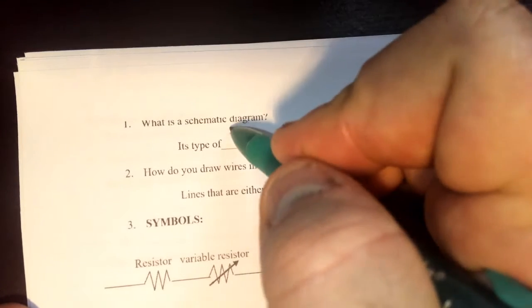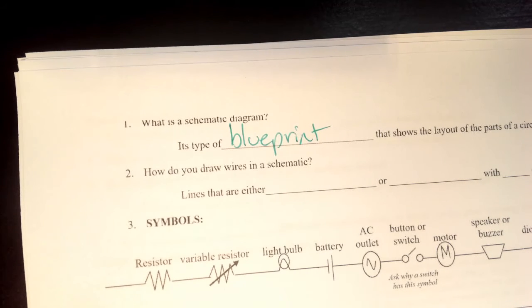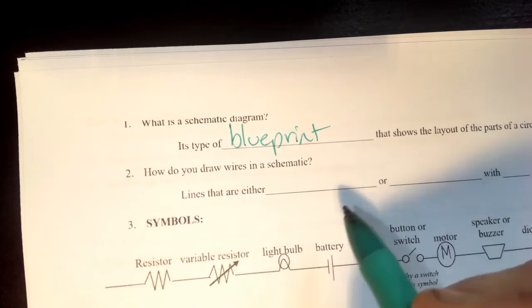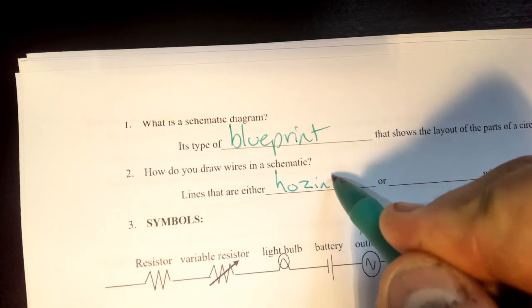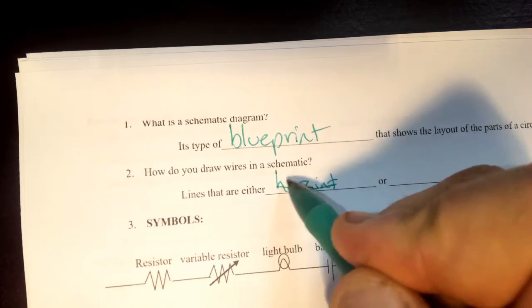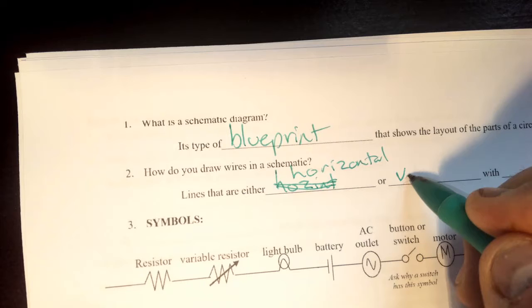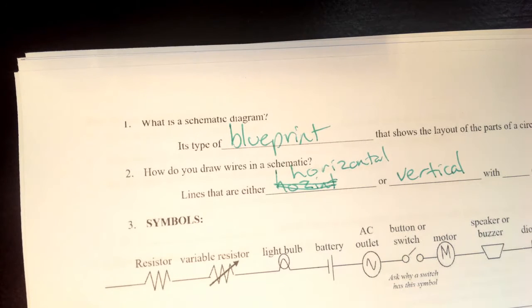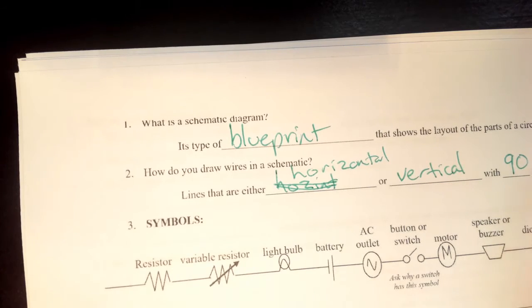A schematic diagram is a type of blueprint that shows the layout of parts of a circuit. When you draw these things, the lines represent wires and the wires are either going to be horizontal or vertical. We try not to have diagonal lines and heaven forbid you never have squiggly lines. Even if the wire is all bent up and squiggly, you draw the lines straight. We don't draw curvy corners, we draw nice sharp 90 degree corners.